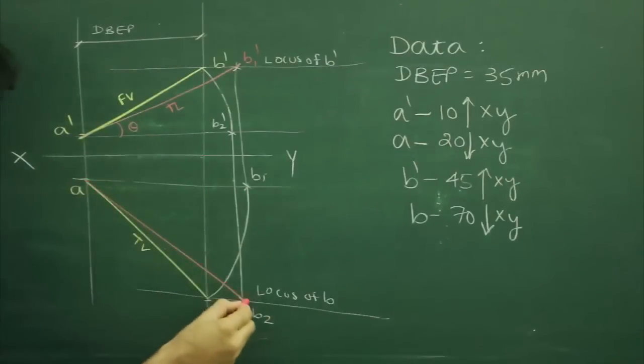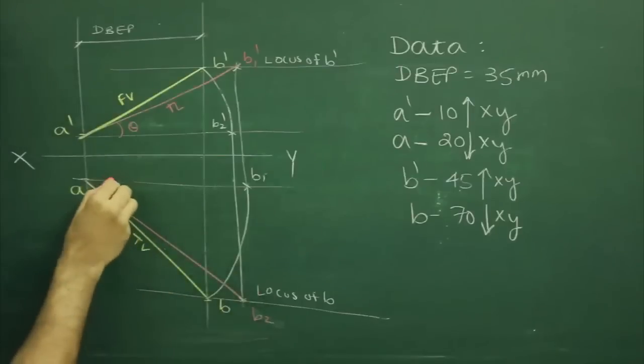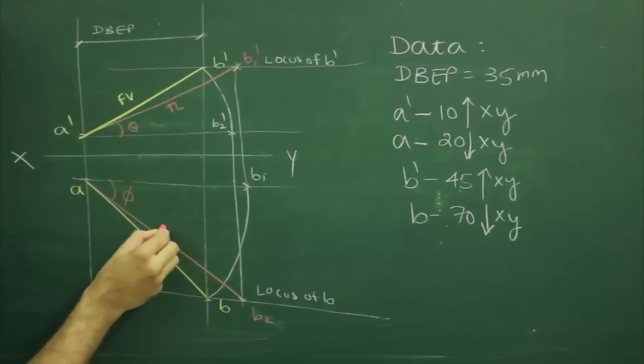Now join AB2. This would be true length inclination with vertical plane phi.